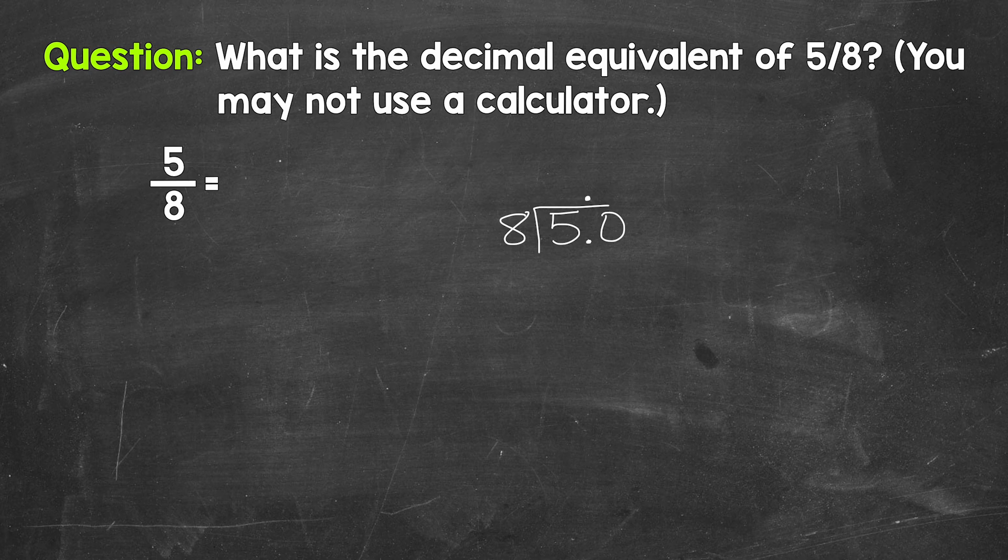How many eights in 50? Six. That gets us to 48. And we need to put that six above the zero since we used that zero and thought of this as 50. That's going to line us up correctly. Now we multiply six times eight is 48.